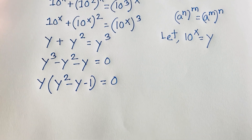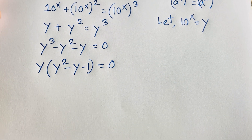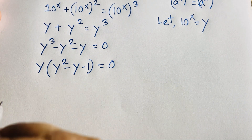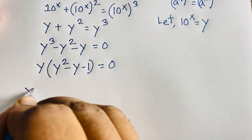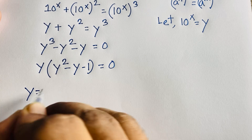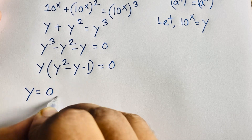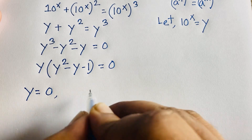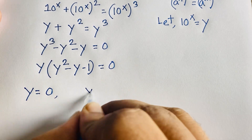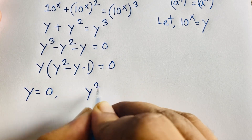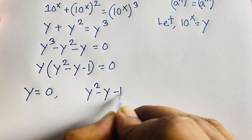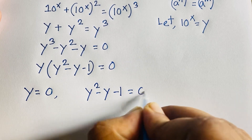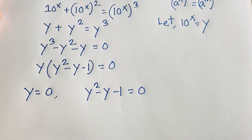This gives us two cases. The first case is y equals 0, and the second case is y² minus y minus 1 equals 0.